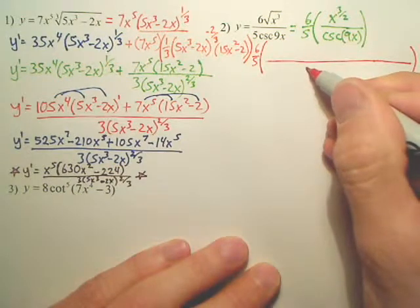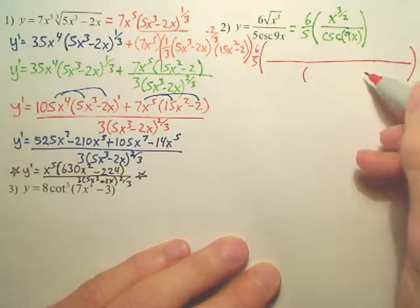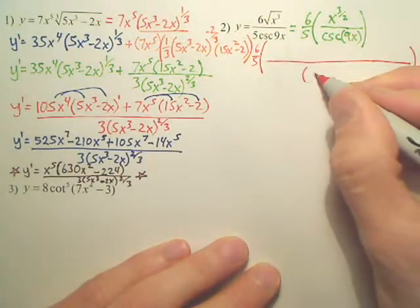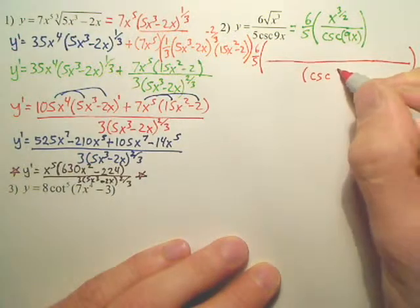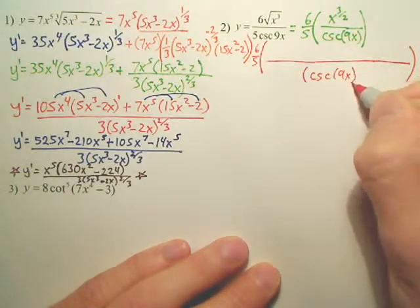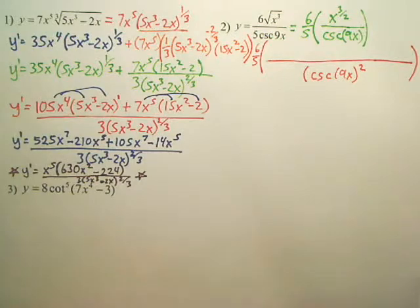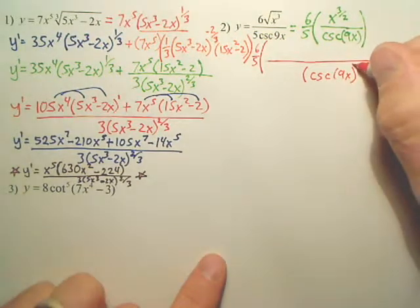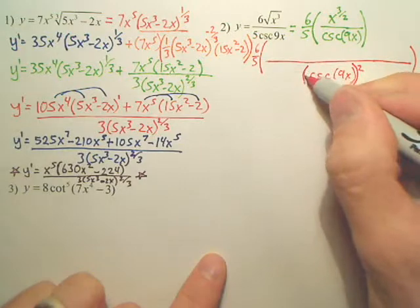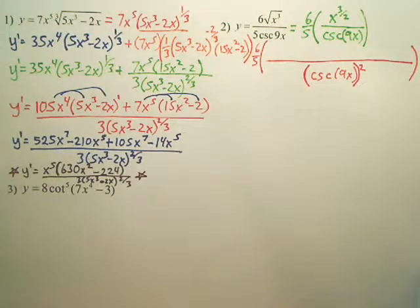Let's just do the bottom real quick. What's the bottom of your quotient rule going to be? Just cosecant 9x squared. I almost made a big mistake without putting that in parentheses there.